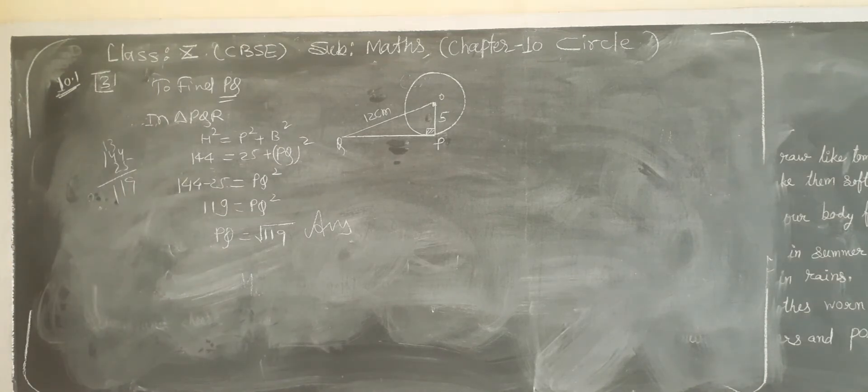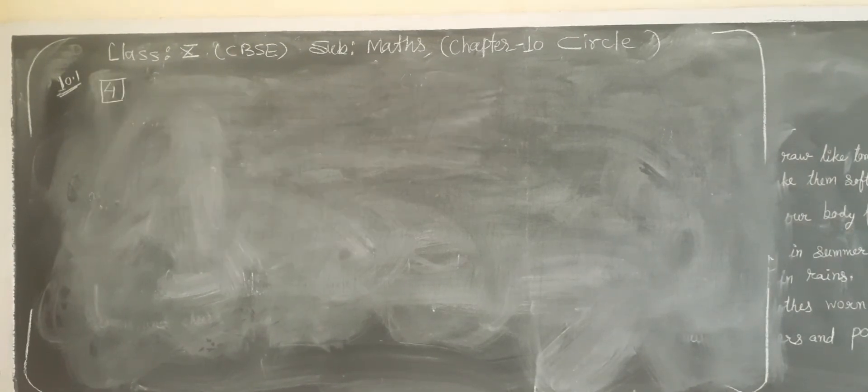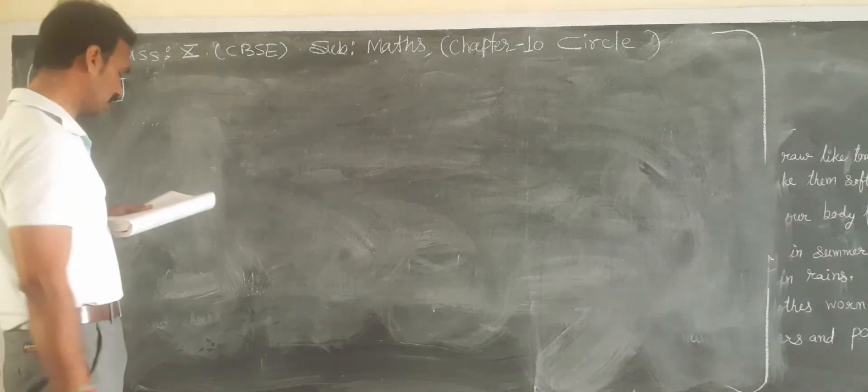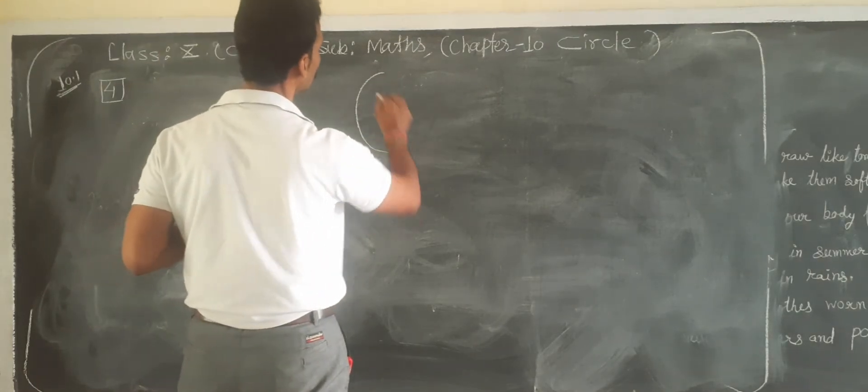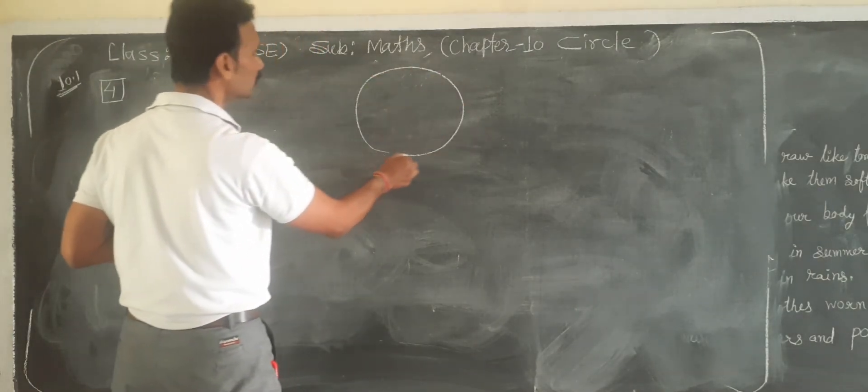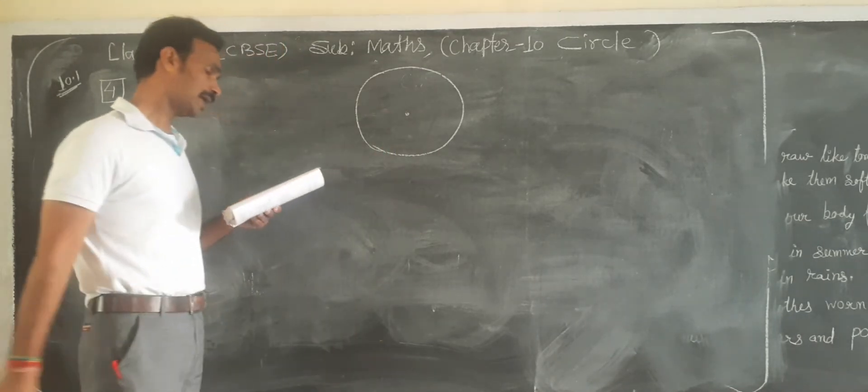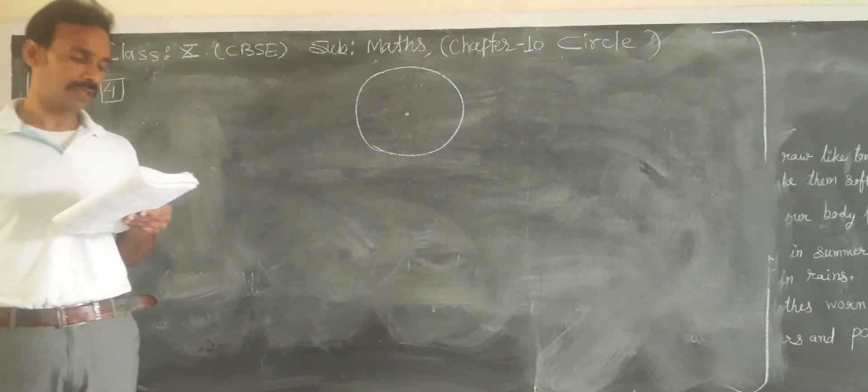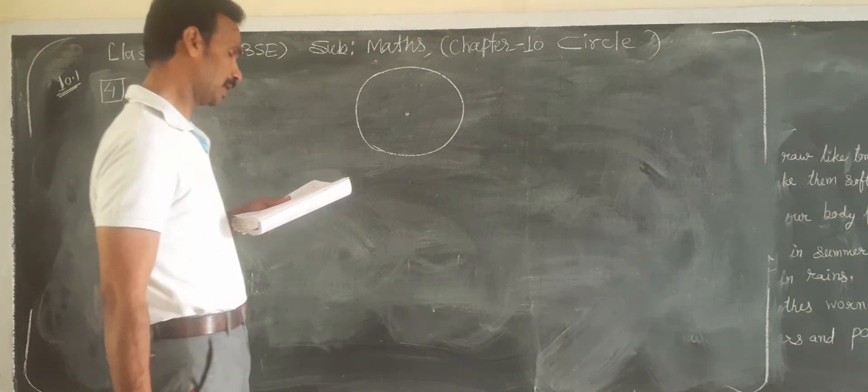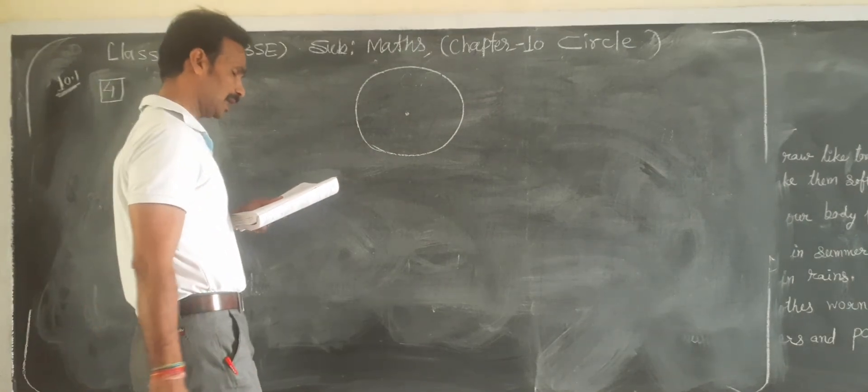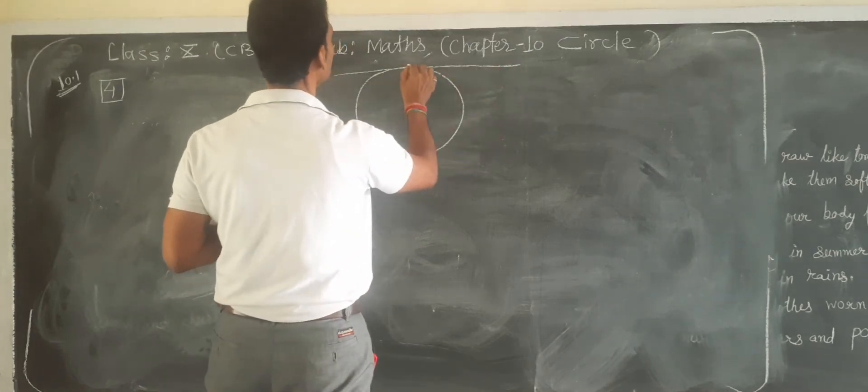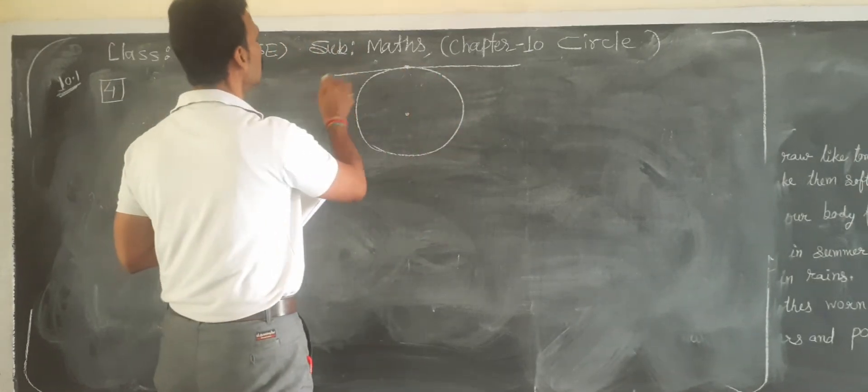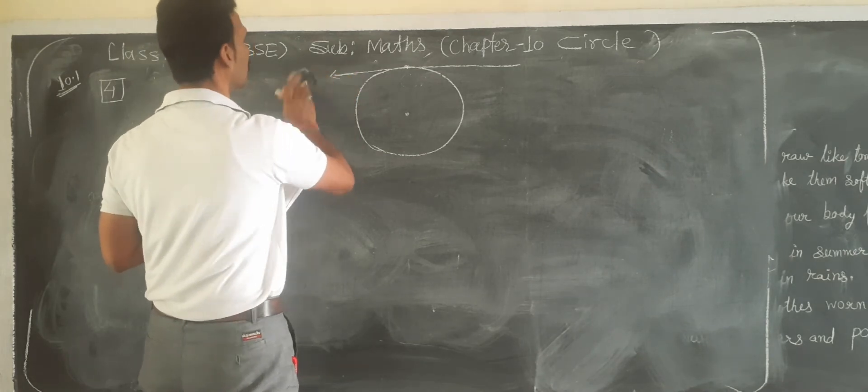Then now question number 4. Draw a circle and two lines parallel to a given line such that one is tangent. So one is tangent, suppose this is L.